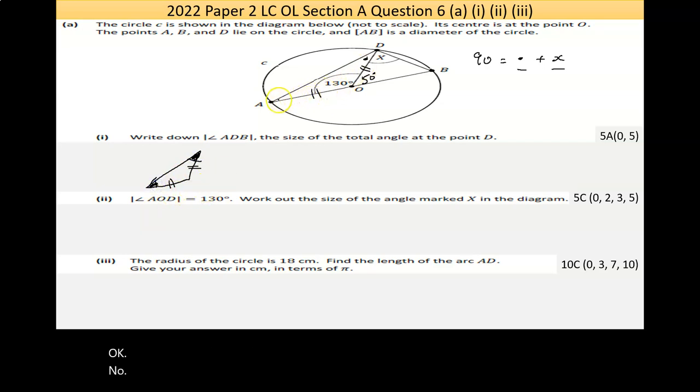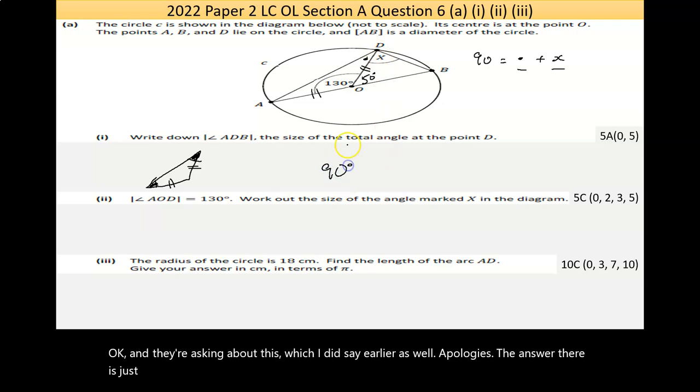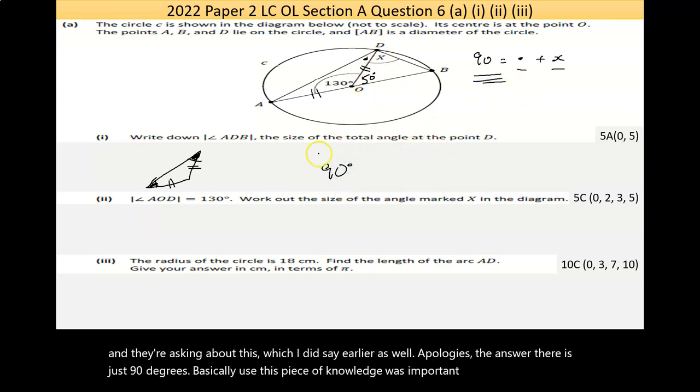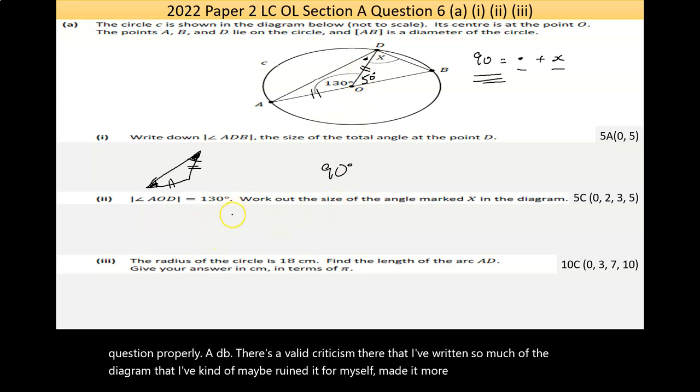I just realized I'm going down the wrong strategy. I thought they were asking about this, but they're actually asking about this, which I did say earlier. The answer there is just 90 degrees. There's a valid criticism that I've written so much on the diagram that it's become cluttered.